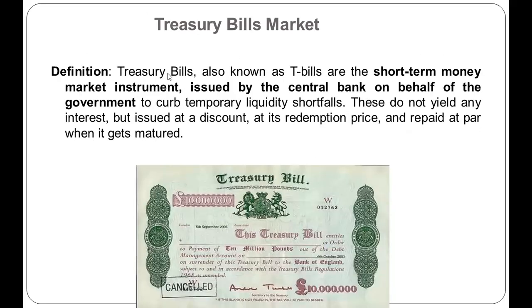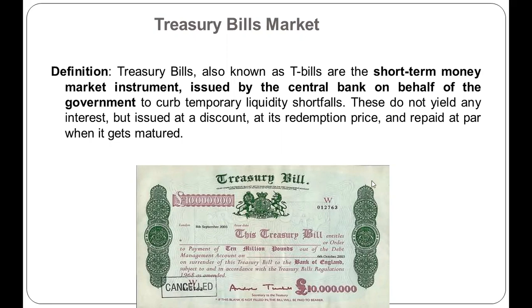The treasury bill market deals with treasury bills, also known as T-bills — short-term money market instruments issued by the central bank on behalf of the government to curb temporary liquidity shortfalls. These do not yield any direct interest but are issued at a discount. The authority issues the T-bill to the client at a discounted price and redeems it at face value when it matures.